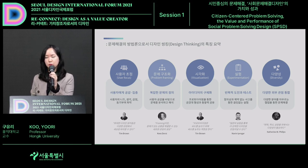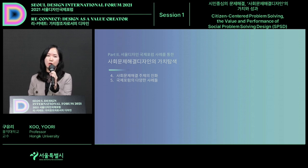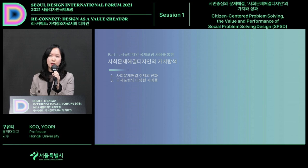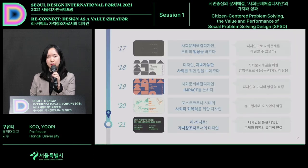Design thinking methodology can be summarized into five characteristics. Up to now on social problem-solving design, I explained the methodology and the major concepts. Now I would like to talk about the cases discussed in the Seoul City Social Problem Solving Design Forum and the performance outcomes.